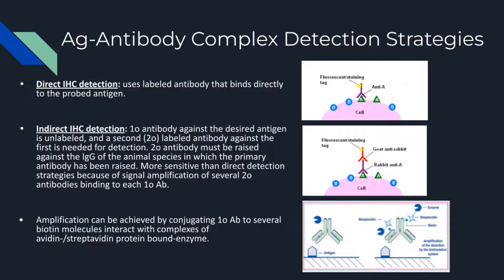Now, to get into more details surrounding IHC, there are a few strategies that are sometimes used for detecting antigens in a tissue sample. First of all, there is the direct IHC detection method in which only one type of antibody is used. This antibody is tagged with a chromogenic reporter or fluorophore, and it binds directly to the antigen of interest.